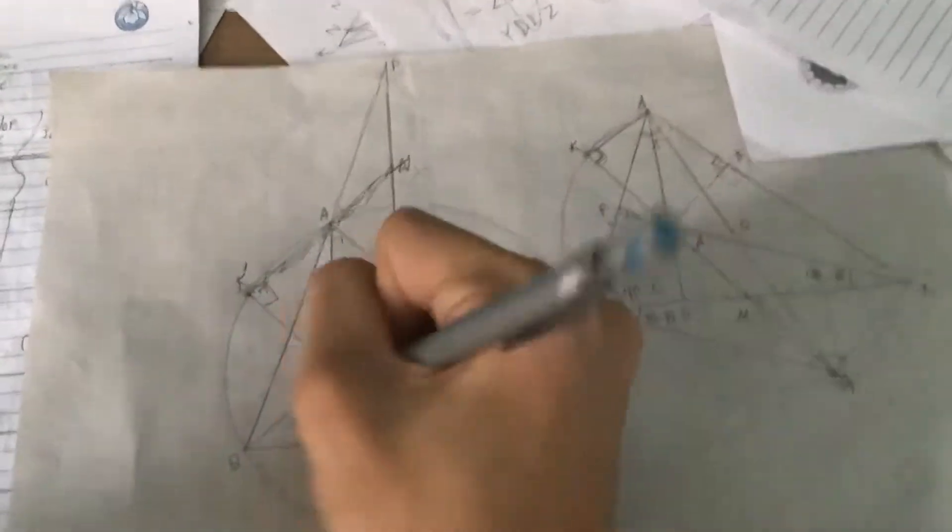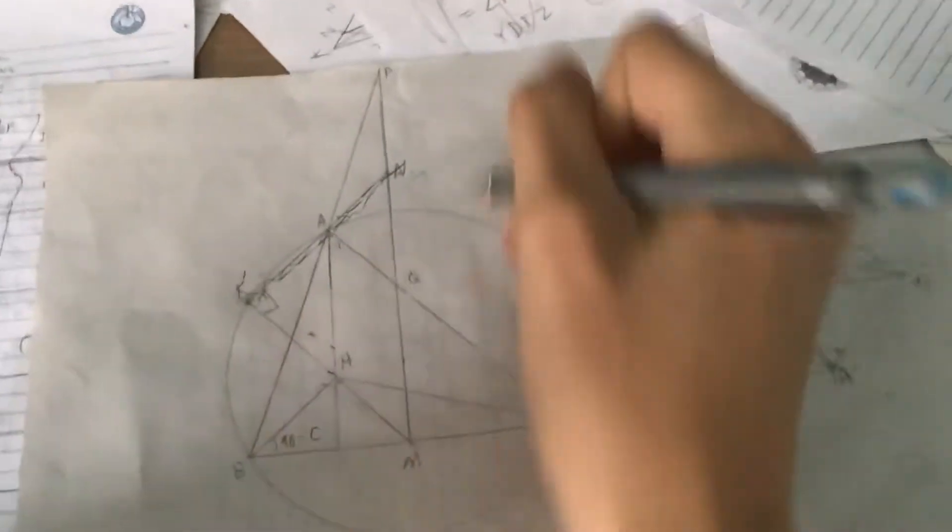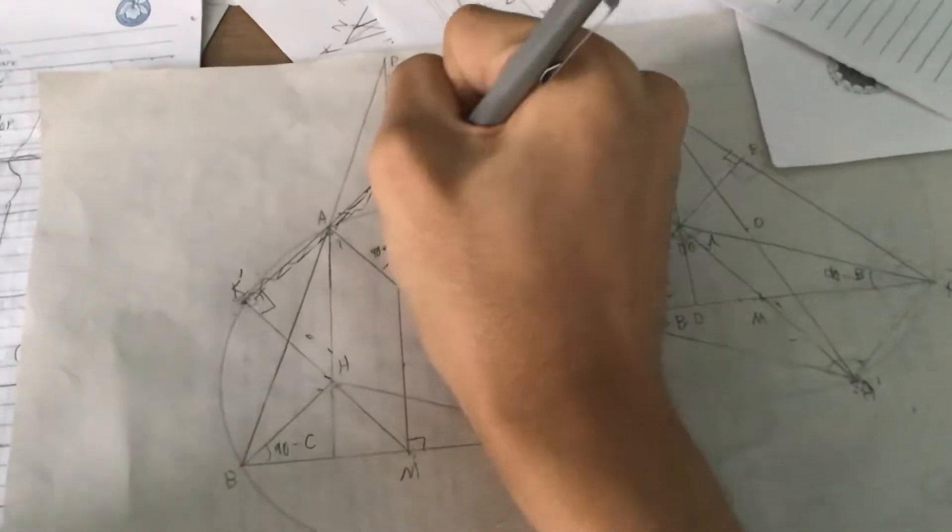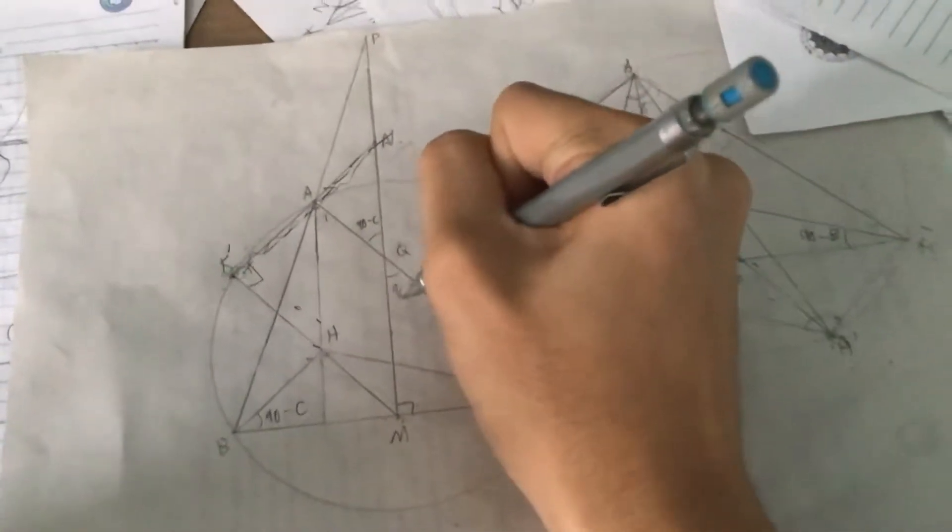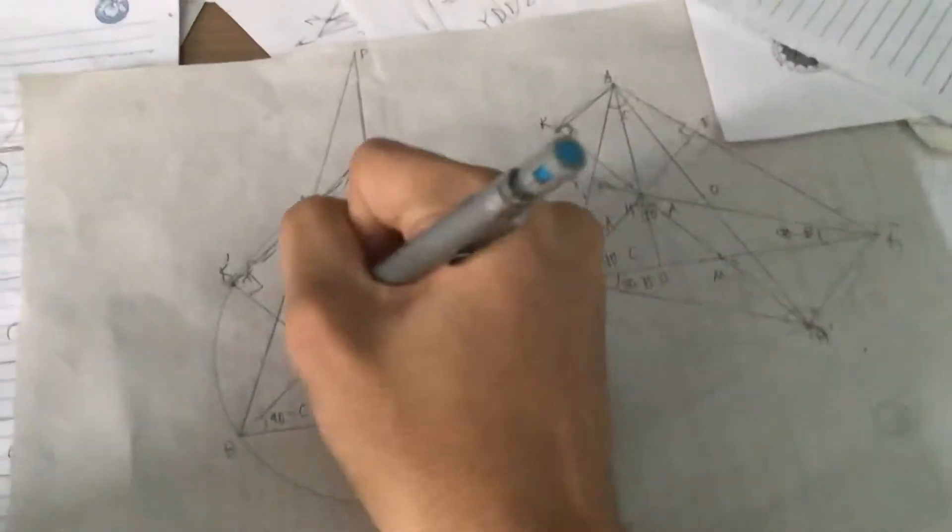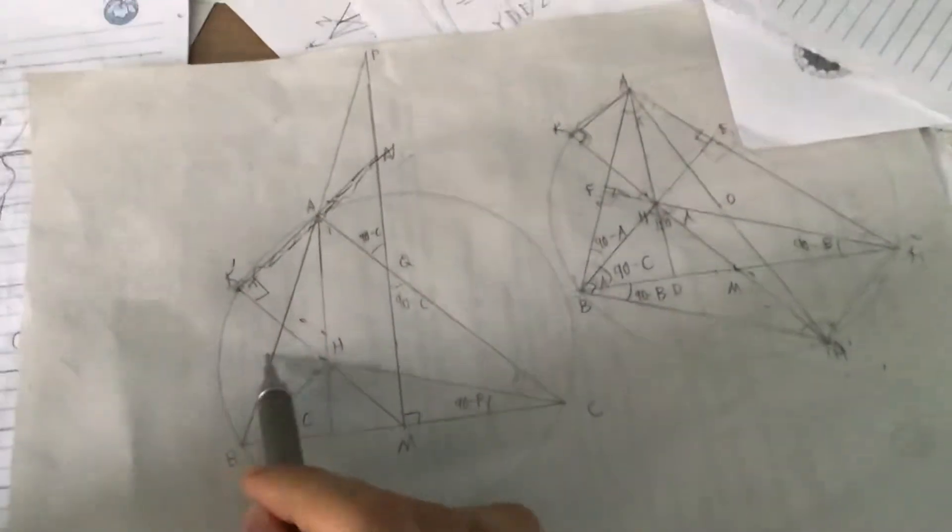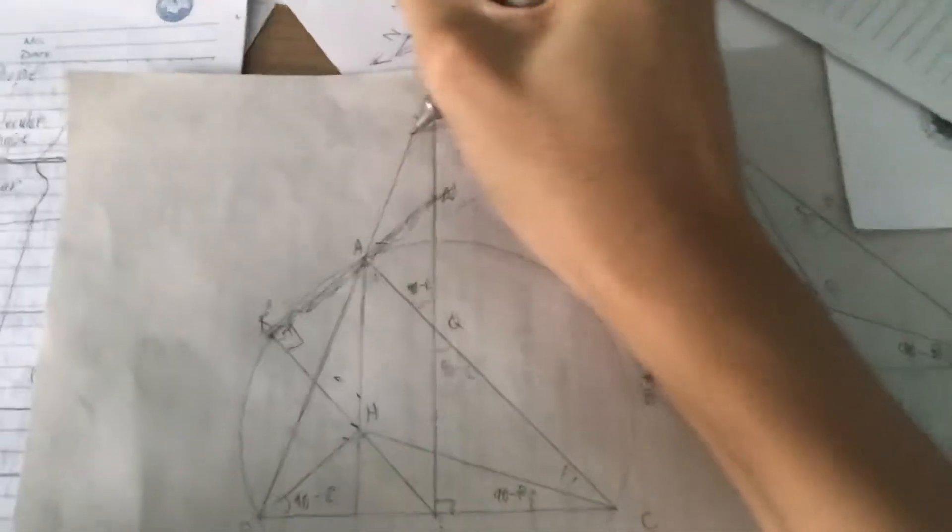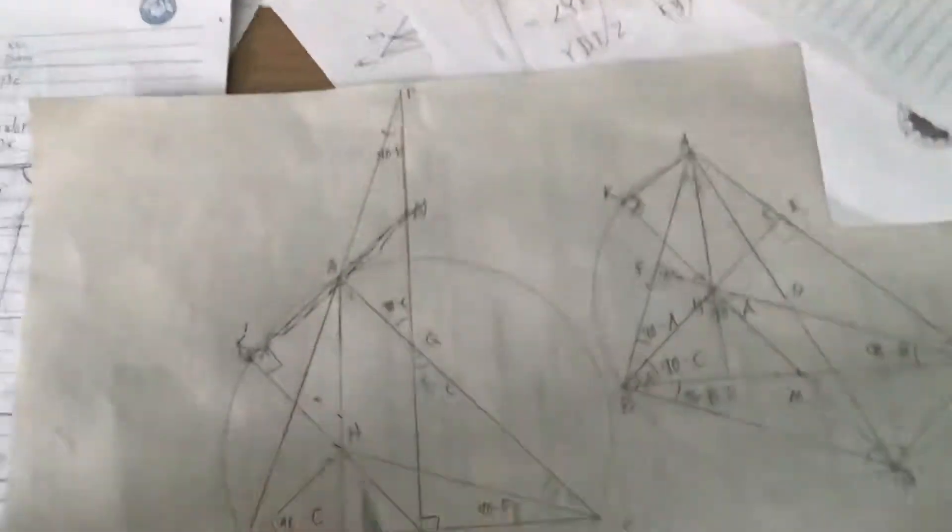A quick angle chase shows us this. This is 90 minus C again. And since this is the perpendicular bisector, this is C again, this is 90 minus C. Similarly, this is 90 minus B, because if we draw that triangle, right angle, 90 minus B. And then this one, another right triangle, so this is 90 minus B. Boom.